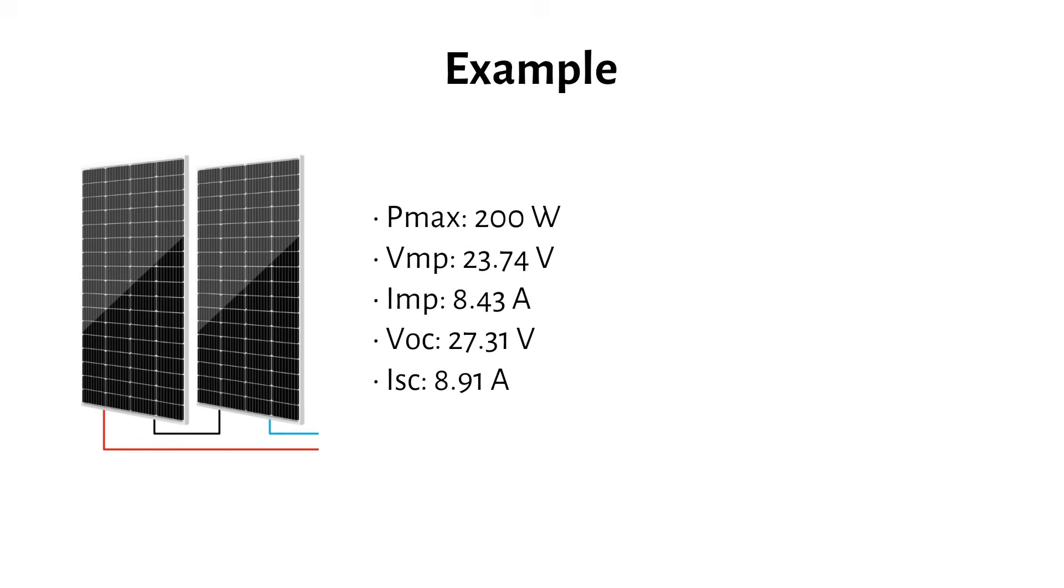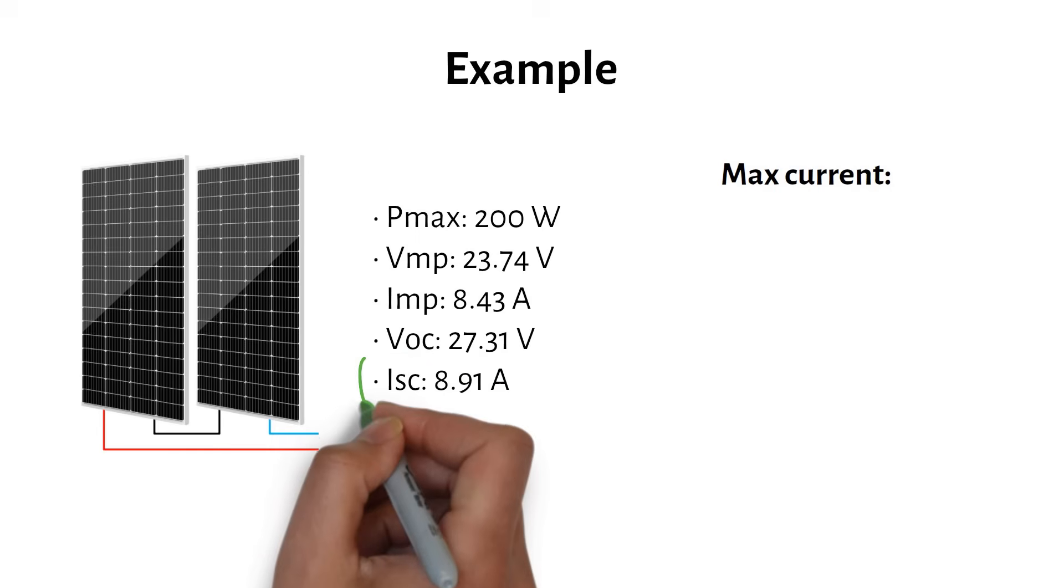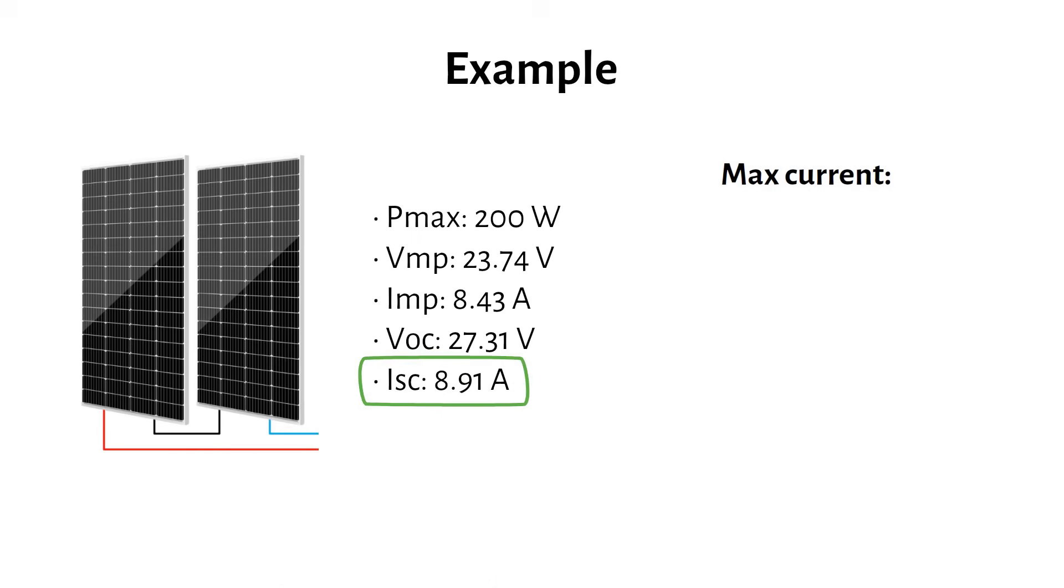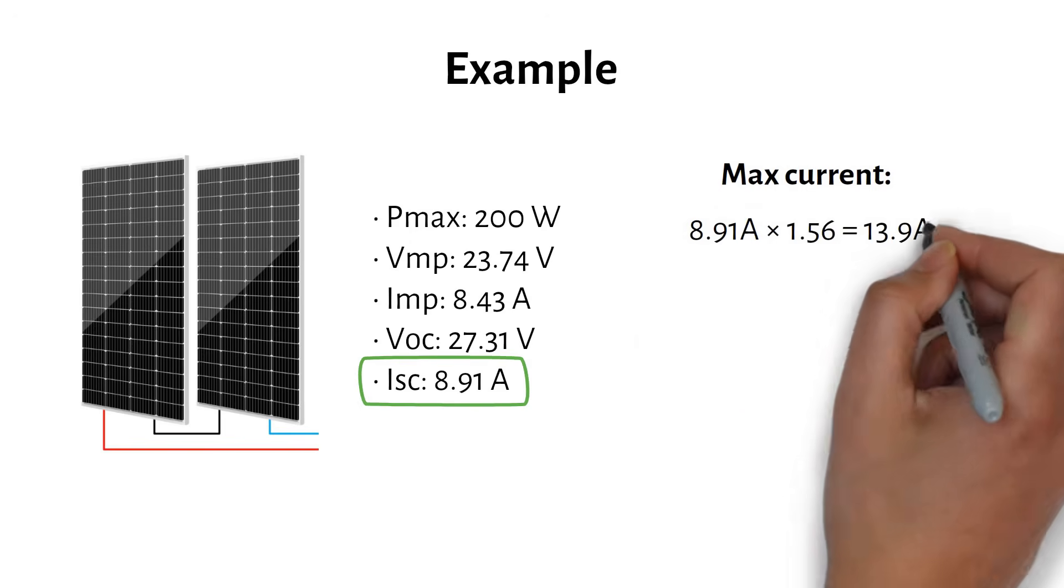First, we make sure the cable can carry the current. This is the maximum current calculation. We take the short circuit current, which is 8.91 amps, and multiply by 1.56, and we get 13.9 amps.